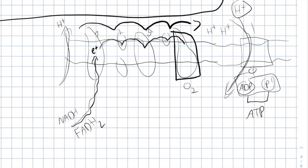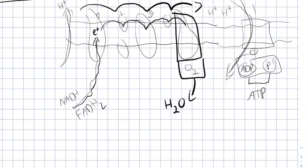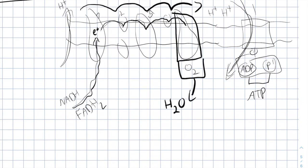Because we have electrons going through the proteins, the last one holds oxygen because oxygen attracts the electrons toward it. When the electrons and the protons combine with the oxygen, water is released. In order to provide a constant supply of oxygen to the last protein of the electron transport chain, we have to keep breathing and provide oxygen to our cells. Without oxygen we will not be able to make enough energy and therefore eventually we will die.